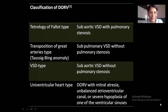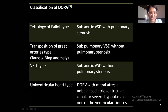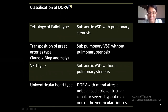Classification of DORV: The first is the Tetralogy of Fallot type, the most common, characterized by sub-aortic VSD with pulmonary stenosis. The second is the Transposition of Great Arteries type, or the Taussig-Bing anomaly, characterized by sub-pulmonary VSD without pulmonary stenosis. Third is the VSD type, characterized by sub-aortic VSD without pulmonary stenosis. The fourth is the univentricular heart type, characterized by DORV with mitral atresia, unbalanced atrioventricular canal, or severe hypoplasia of one of the ventricular sinuses.